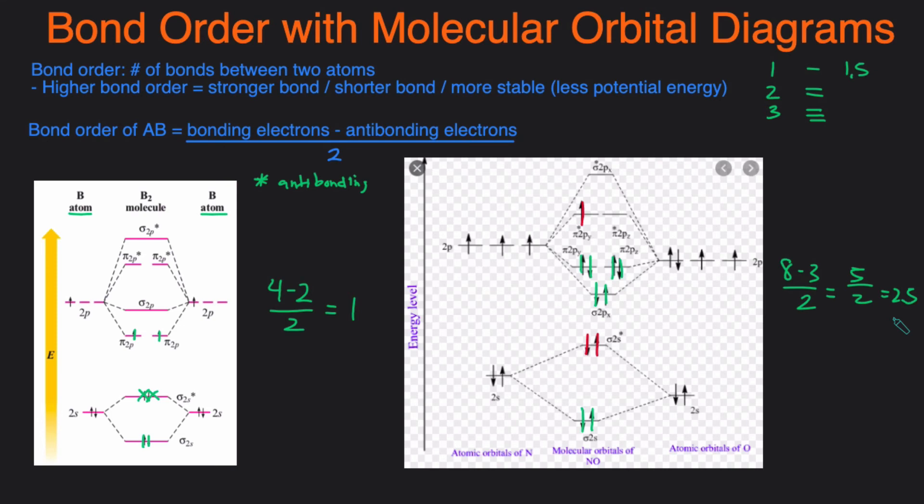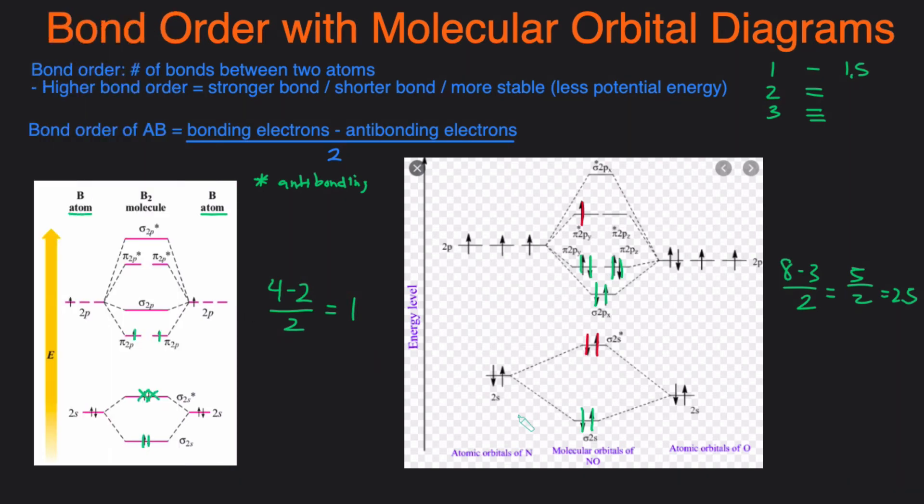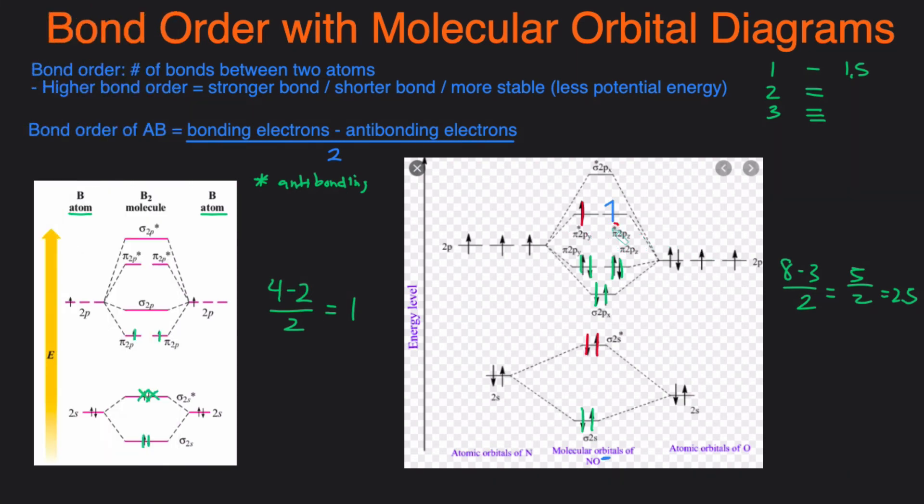Now on the test you might also be asked to draw the molecular orbital diagrams or to calculate the bond order of a molecule that has a charge. So what if we were to calculate the bond order for NO minus? Well we know that if there's a negative charge it means that there's just one extra electron. So we're just going to add an extra electron right here and then we can recalculate it.